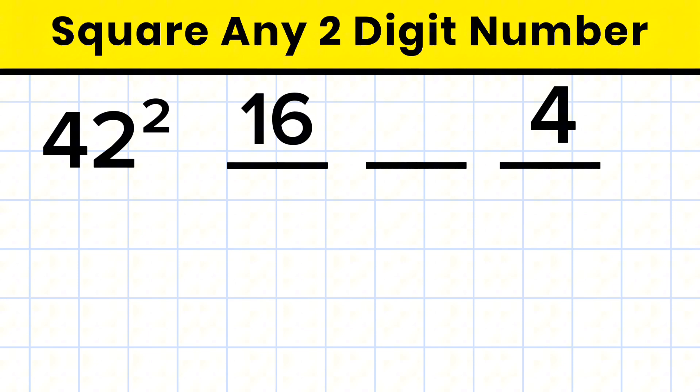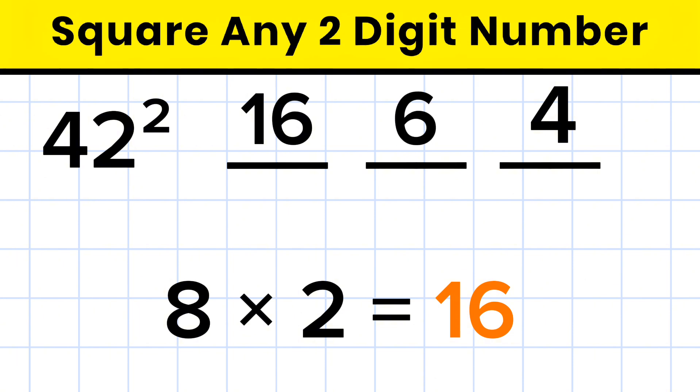Now let's do it for the middle part. So 4 times 2 gives us 8. Then 8 times 2 gives us 16. Since it's 2 digit, write 6 in the middle and carry over 1. Now add that carry to the first part.